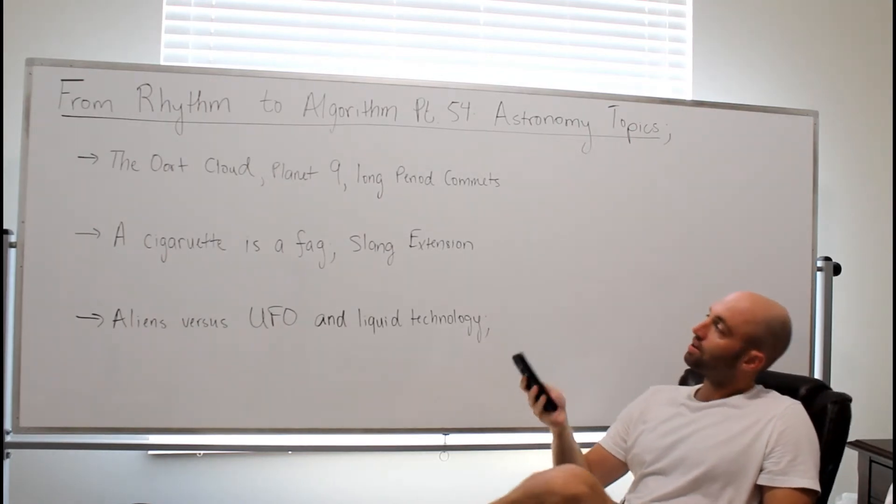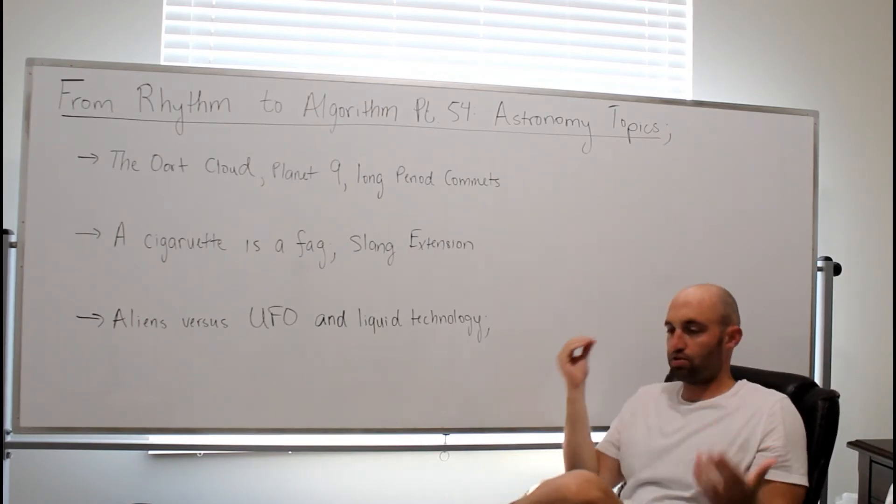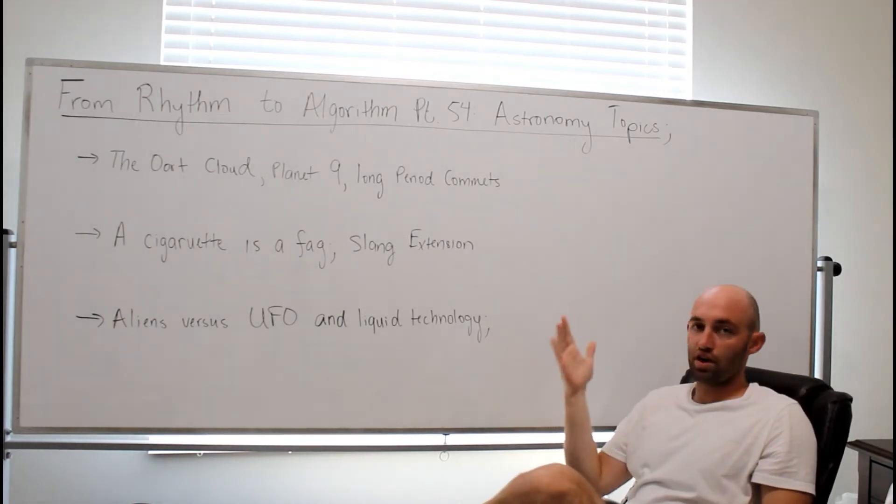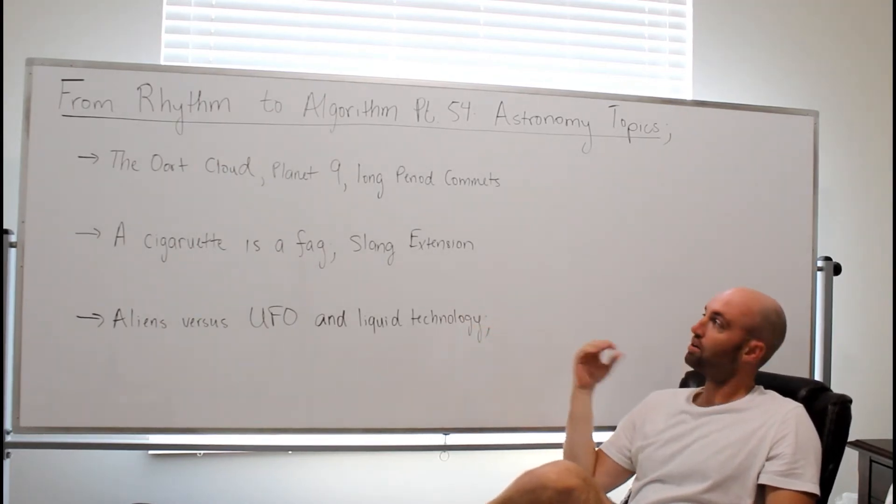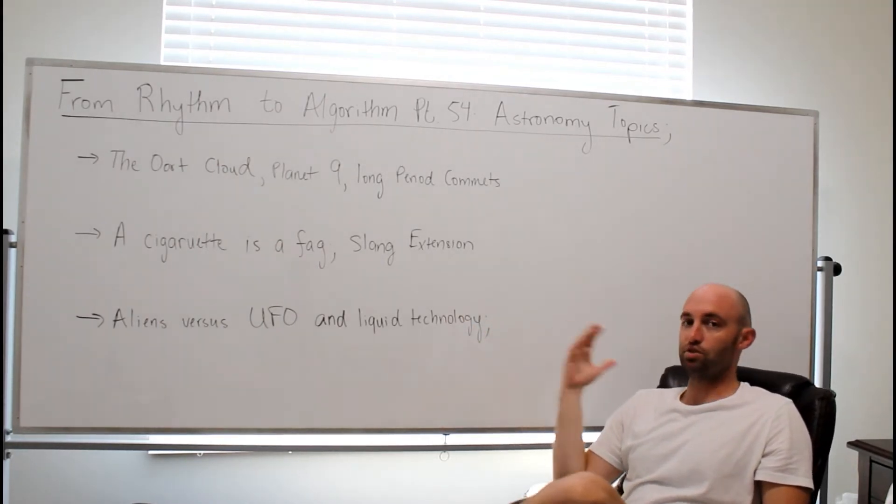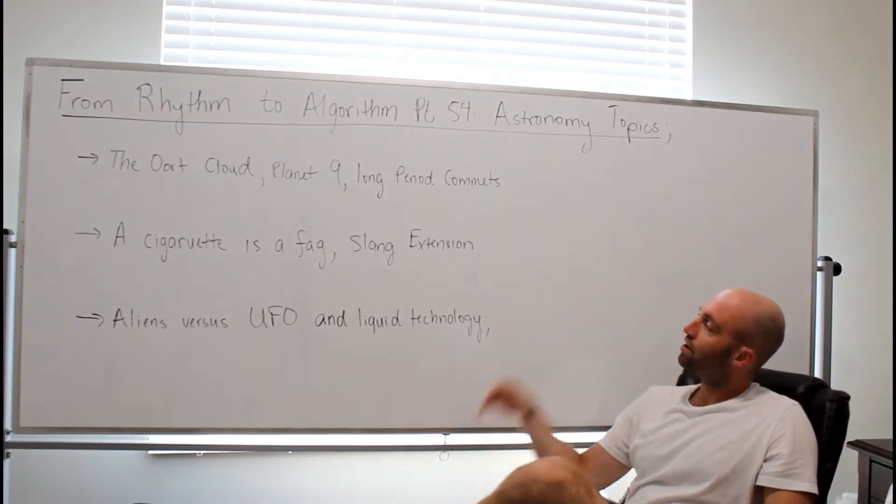What is the Oort Cloud? So, let's start with the evidence, right? If you go to school right now, they would say you have the Kuiper Belt, which is pretty far away, and then you have the Oort Cloud, which is extremely far away. But the actual data is that you have long period comets, and you're not sure where they're originating from.